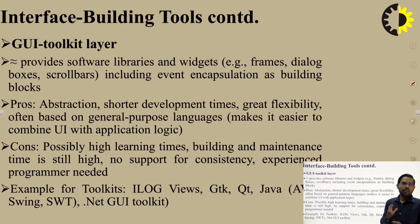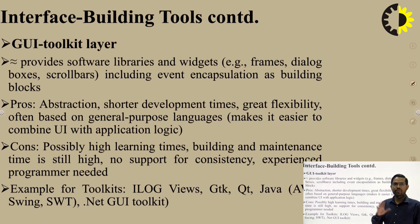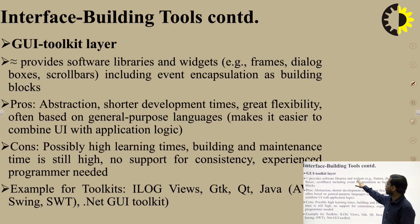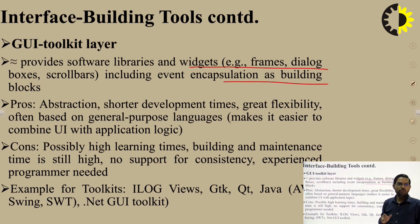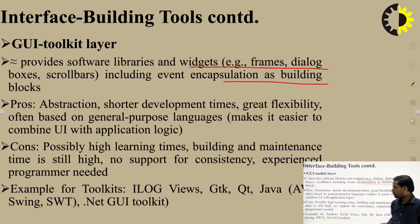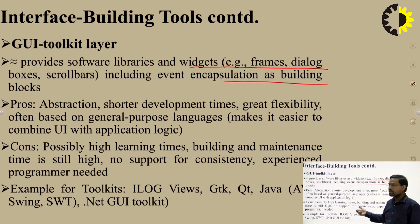The windowing system offers little support for interactive tools and no visualization tools. The GUI toolkit layer provides a software library with widgets, frames, dialog boxes, and scroll bars, including event encapsulation. Pros: shorter development time, great flexibility, often based on general-purpose languages, easier to combine UI with application. Cons: possibly high learning time, building and maintenance time still high, and no support for consistency.